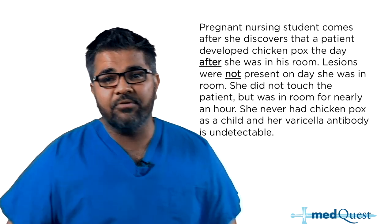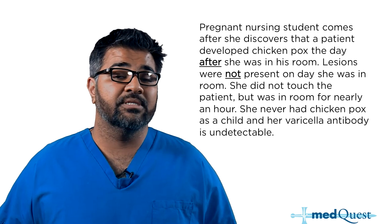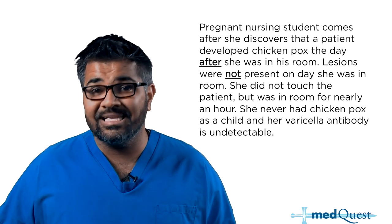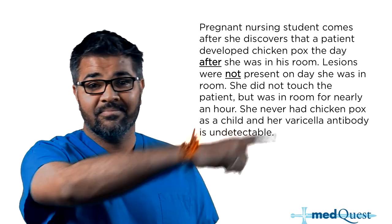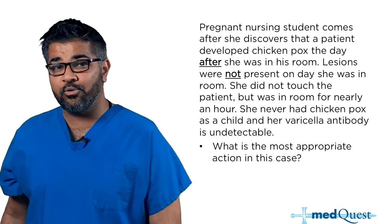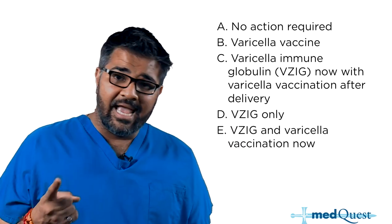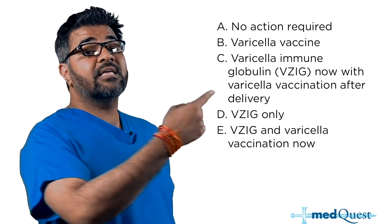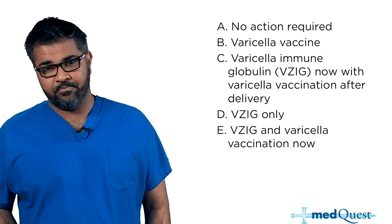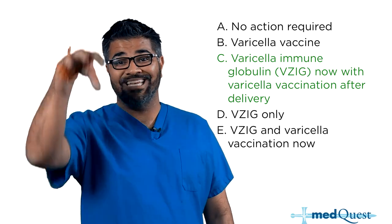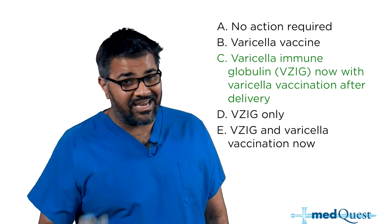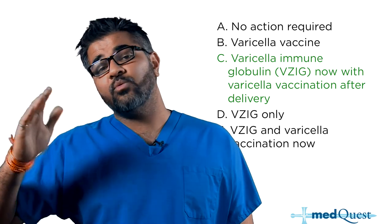A pregnant nursing student comes in after discovering that a patient developed chickenpox the day after she was in his room. Lesions were not present when she was there; she did not touch the patient but was in the room for nearly an hour. She never had chickenpox as a child, her varicella antibody is undetectable, and she is pregnant. The answer: give varicella immunoglobulin now and vaccination after delivery. You need to give her immediate immunity right now to fight off any varicella exposure, and then after delivery, immunize her long term. Healthcare workers should be screened for varicella and vaccinated if not immune.